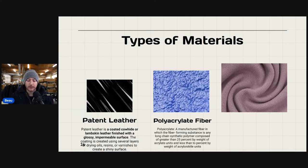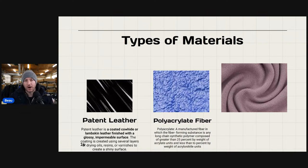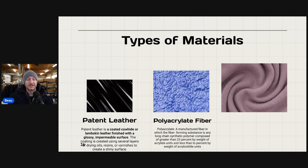Polyacrylic fiber is a manufactured fiber in which the fiber-forming substance is any long-chain synthetic polymer comprised of greater than 85% by weight of acrylic units and less than 2% by weight of acrylic trial units. This is a very synthesized, non-organic material used in cheaper products. The more you see polyamide and polyacrylic, they're just branches off of acrylic, synthesized differently and cheaper to produce, so you're going to see them in lower-end clothing.